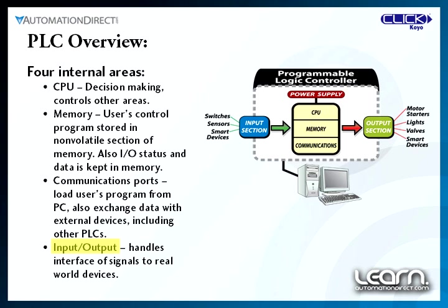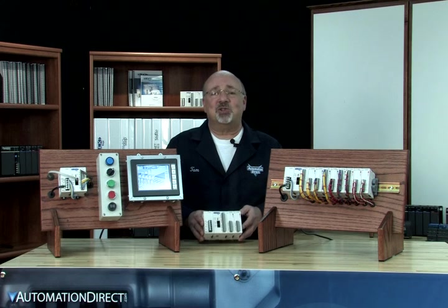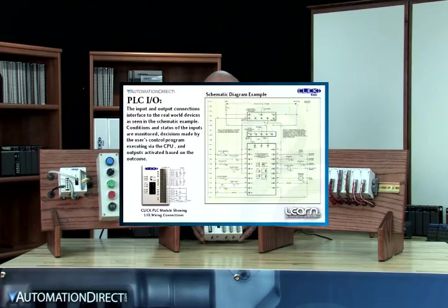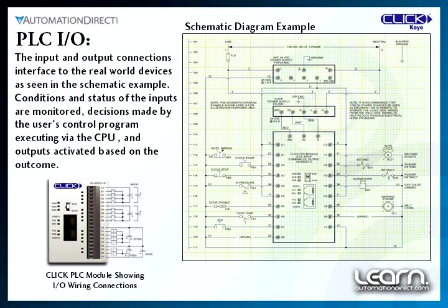After decisions are made by the user's program, real-world control of devices is carried out by the CPU's outputs. Here we see a schematic diagram example showing how inputs and outputs are wired to devices such as push buttons, limit switches, pilot lights, motor starters, and solenoid valves. The PLC's IO connections are often available with different input and output types, such as DC and AC voltage inputs and also DC, AC, and relay contact type outputs.